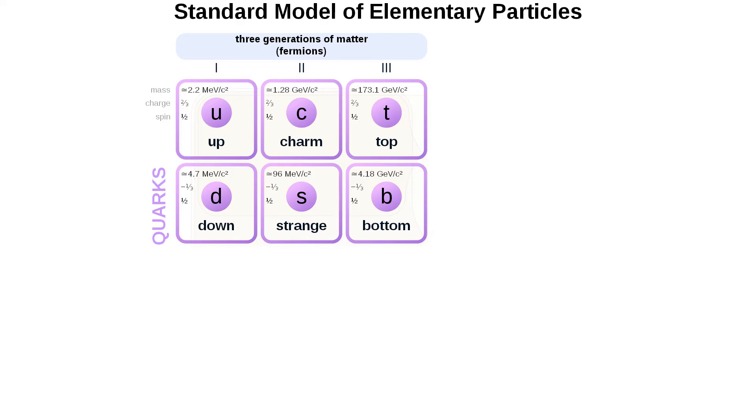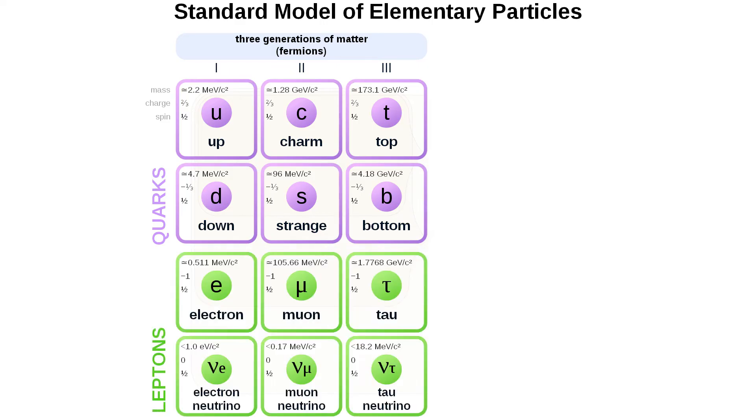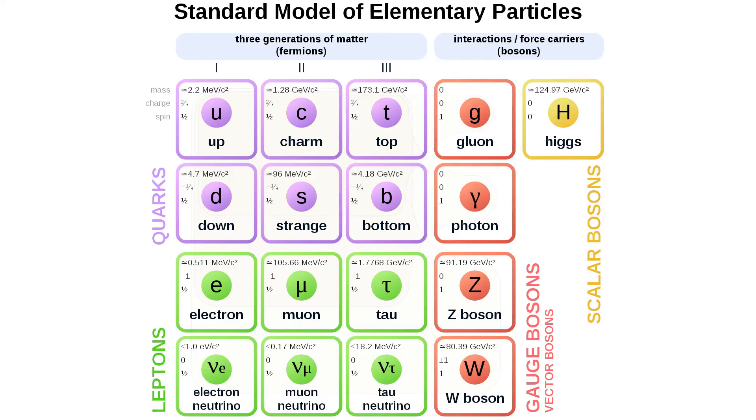What is a fundamental particle? It's loosely defined by Wikipedia as a particle with no substructure, meaning that it's comprised of no other smaller particles. These particles include quarks, leptons, as well as the fundamental bosons.